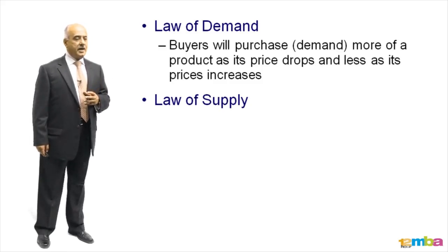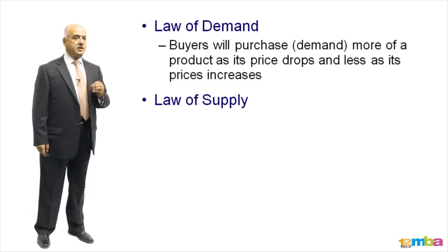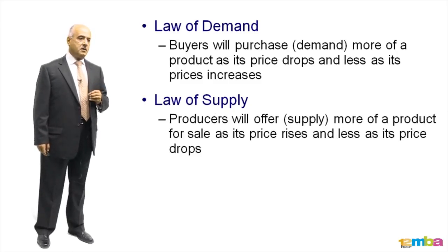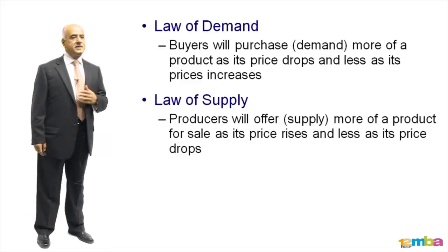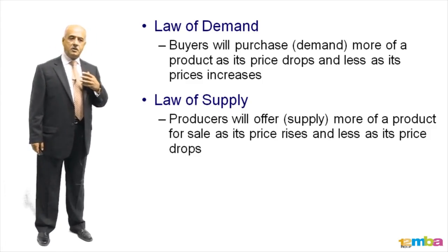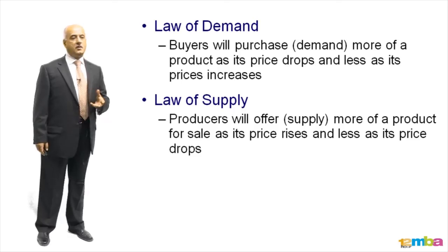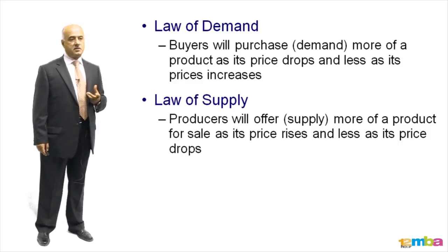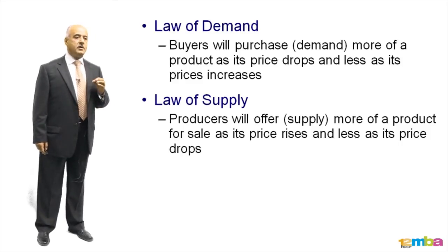The law of supply means that the producers will offer or supply more of a product for sale as its price rises, and less as its price drops. So the producers will be willing to produce more if the price is high because they can make money, and willing to produce less if the price drops. That is again what is happening in our day-to-day experience in the oil and gas industry.